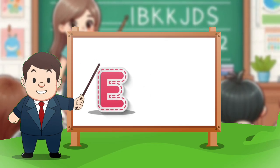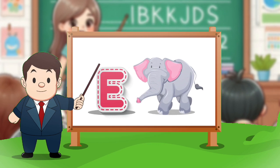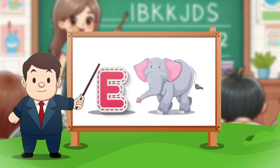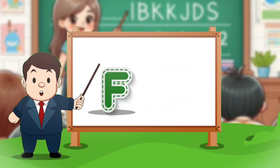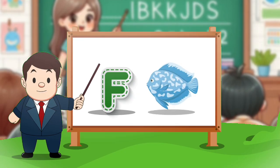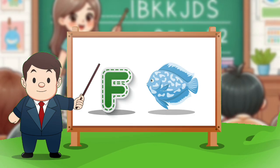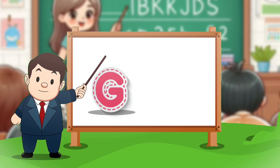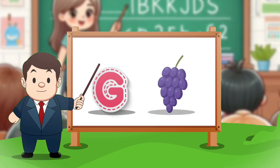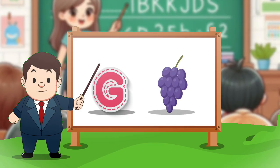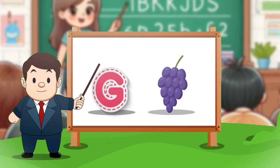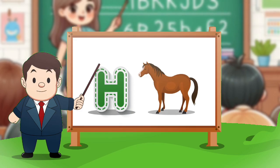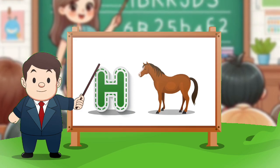E for elephant. F for face. G for crab. H for horse.